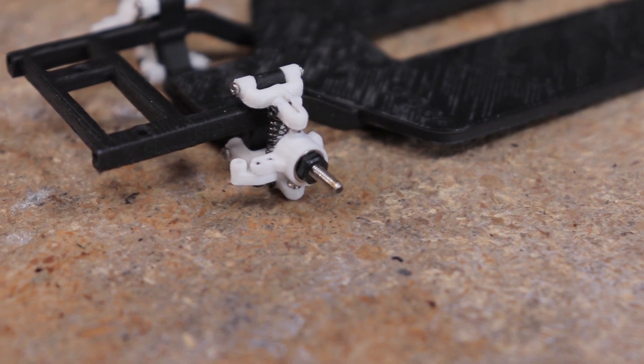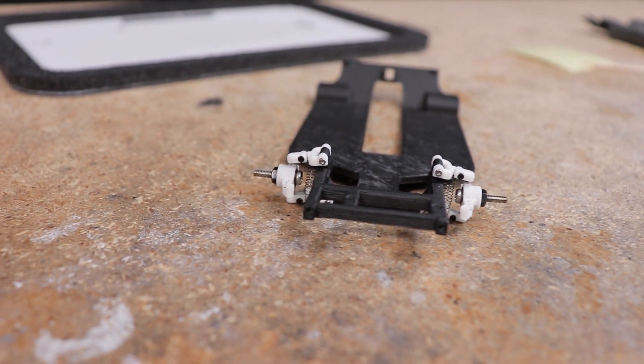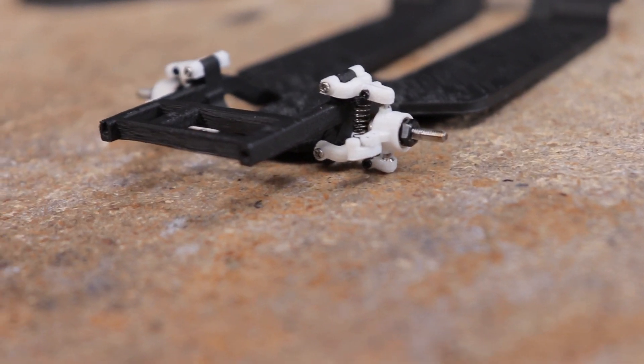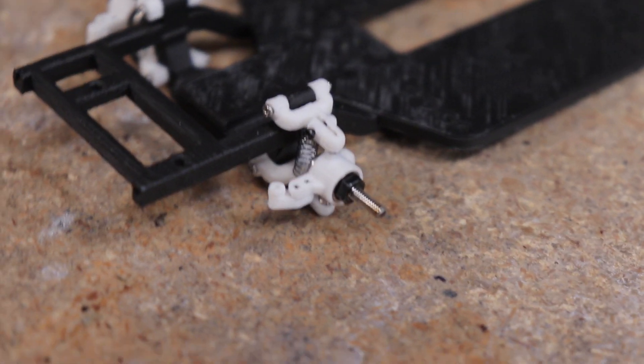We wanted this assembly to have better scale looks than the previous MC-01 front suspension assembly while still being FDM 3D printable, and I think this really nailed it.